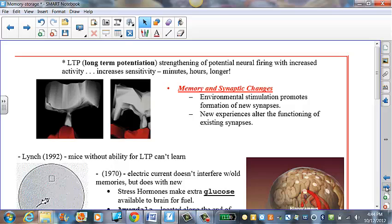And I always saw that as the potential for a receiving neuron to fire that next message becomes more reliable long-term. So by definition, it's the strengthening of a potential neural firing with increased activity over time or with rapidity. And it increases the sensitivity for minutes, hours, even longer.